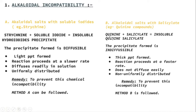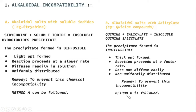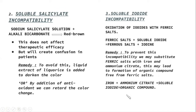Another alkaloidal salt, quinine, reacts with salicylate, resulting in the formation of an insoluble precipitate that is indiffusible in nature. When a diffusible precipitate forms, we can use Method A — changing the order of mixing or diluting the solution. When an indiffusible precipitate forms, we use Method B — replacing one reactant with another.